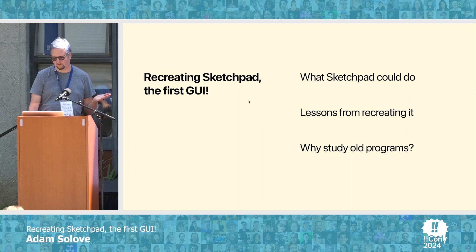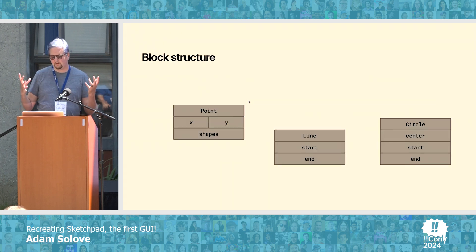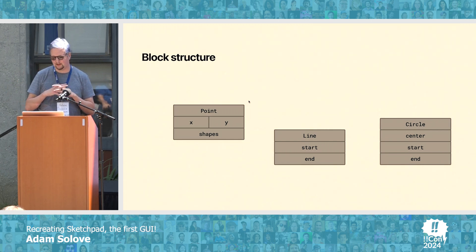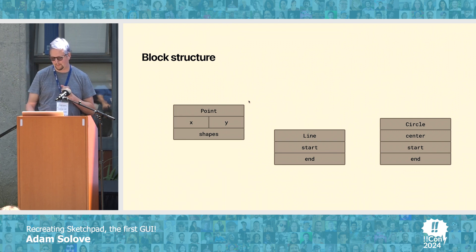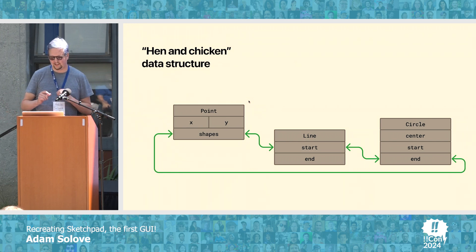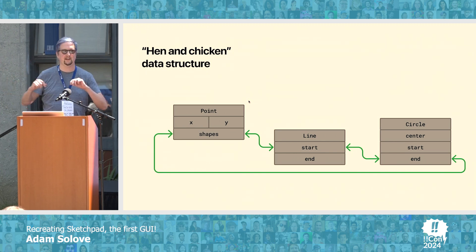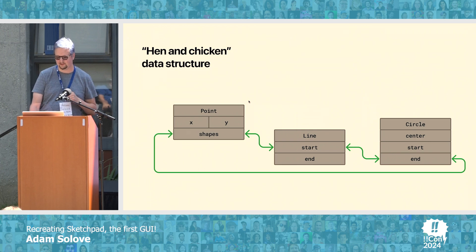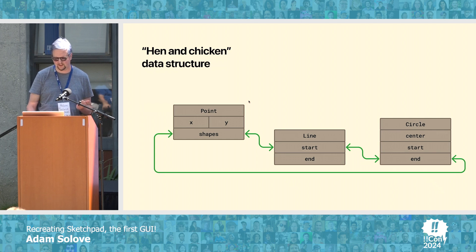Let's talk about what it took to implement this and what I had to recreate. In memory, we represent our drawing as a bunch of individual blocks — pretty much like structs, but Sutherland called them blocks. We've got a point block that knows its x and y coordinates, a line, and a circle. He invented a data structure he called a "hen and chickens" — what we today would just call a ring — that connects all the items that share the same relationship to some parent. So this lets you walk through to all the shapes that depend on a given point, or if you're doing something with the line and need to know its start point, you can walk through the ring to find that. It's an efficient way to represent that.